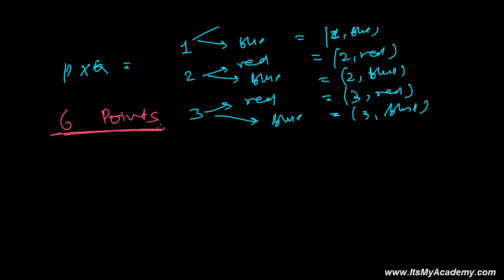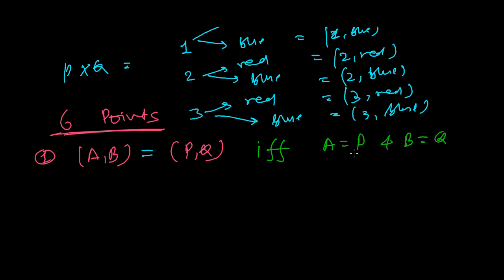The first point: if (A,B) is an ordered pair and we have another ordered pair (P,Q), then two ordered pairs will be equal if and only if the first element of the two ordered pairs is equal and the second elements of both ordered pairs are equal. If the first elements and second elements both are equal, then we can say that two ordered pairs are equal.